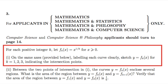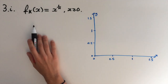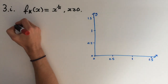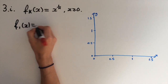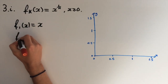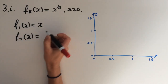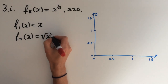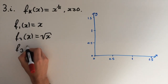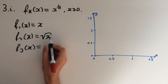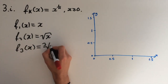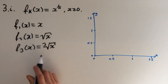For part i, we're given a set of axes, and on it we need to sketch the graphs of y equals fk of x for k equals 1, 2, and 3, and show where all of these curves intersect. So first we need to work out what our three functions are. f1 of x equals just x, f2 of x equals x to the power of a half, which is the same as the square root of x, and f3 of x equals x to the power of a third, which is the cube root of x.